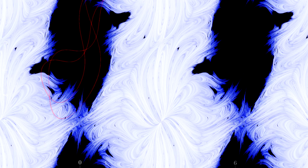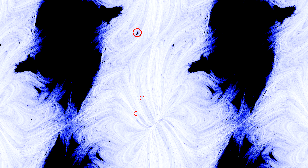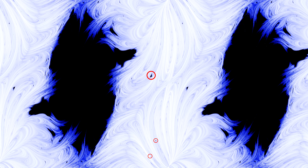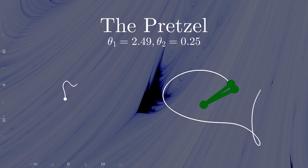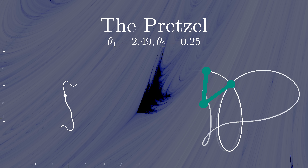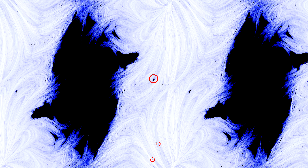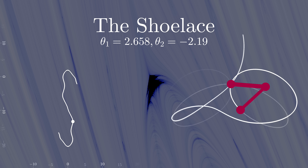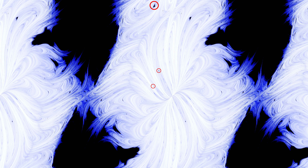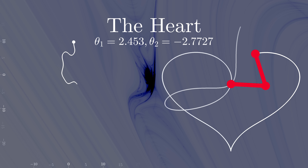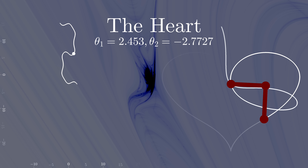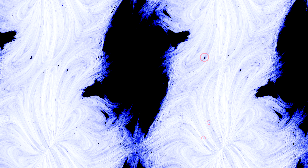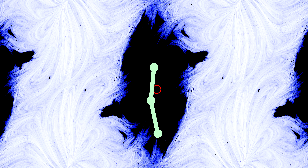Let's look closer at the chaotic region in white. There are a few spots of black in here. These islands of stability contain special pendulums which follow stable paths. This big island of stability contains the pretzel we saw earlier. This one, which I call the shoelace, traces a more complex pattern. This one draws a picture of a heart — this island is particularly small. We've seen how the pendulums which start near angle zero-zero are very well behaved; those pendulums have extremely low mechanical energy.